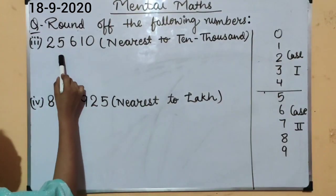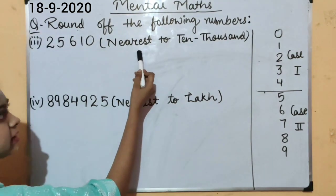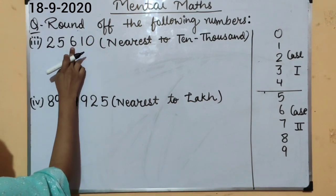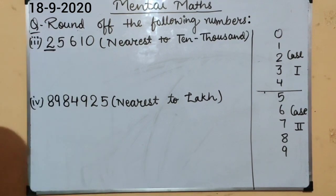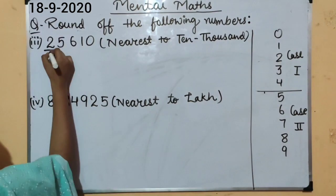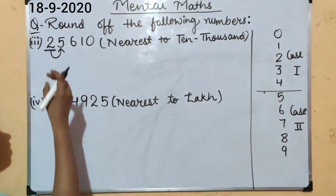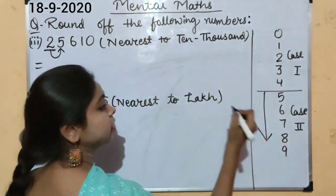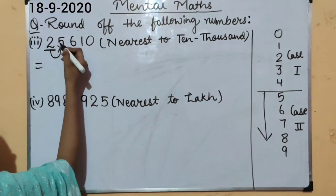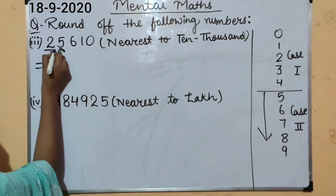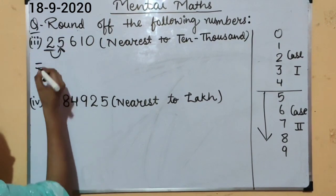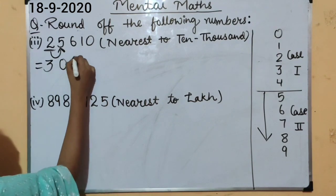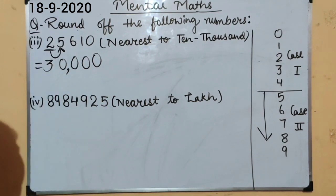Our third question is 25,610, rounded to the nearest 10,000 place. Let's find the 10,000s place: 1s, 10s, 100, 1000, 10,000. The digit at the 10,000s place is 2. The previous place digit is 5. Since 5 belongs to Case 2 — greater than or equal to 5 — the digit at the mentioned place becomes one step greater: 2 becomes 3. The previous place digits all become 0. So the answer is 30,000.